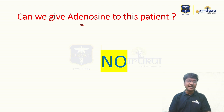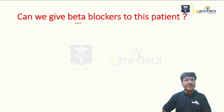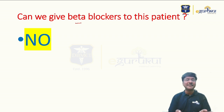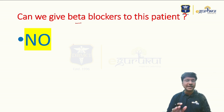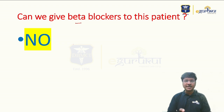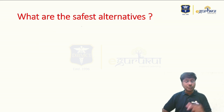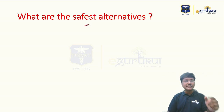The next important question is: can we give beta-blockers to this patient? The answer is also no, because beta-blockers are contraindicated in asthmatics. It is mainly non-selective beta-blockers that are contraindicated, whereas selective beta-1 blockers can be given if there is no other option. But the point here is: what are the safest alternatives in this patient?